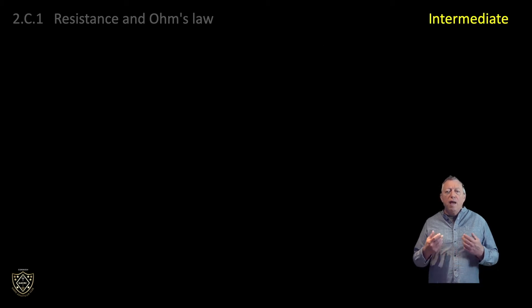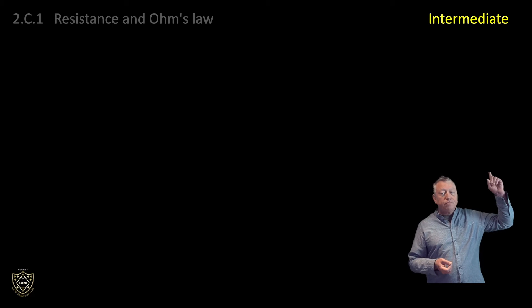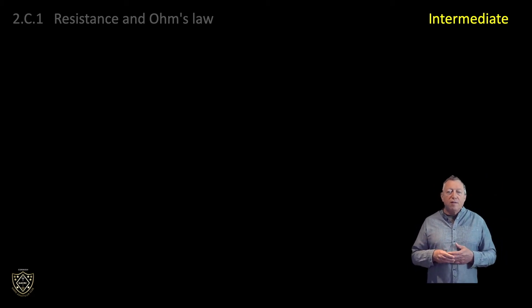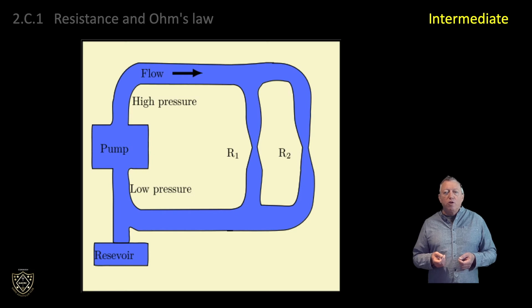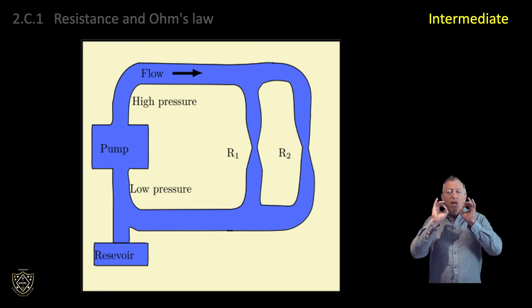Moving on to intermediate license level. At foundation license level, in video 2A2, we looked at the water analogy as a mechanism to visualise electricity in a circuit. This graphic extends that analogy to see what happens if we connect two resistors in parallel. The pinch points, R1 and R2, provide opposition to the current flow. The opposition is less than if there were only one pinch point. If the cross-sectional areas of the pinch points is equal, then the combined opposition to water flow is half what it would be with just one pinch point.